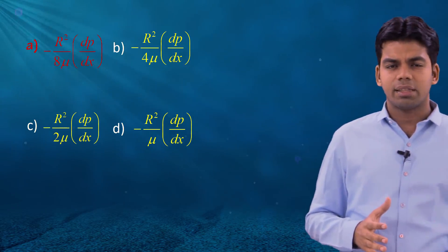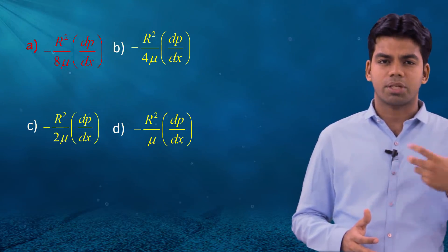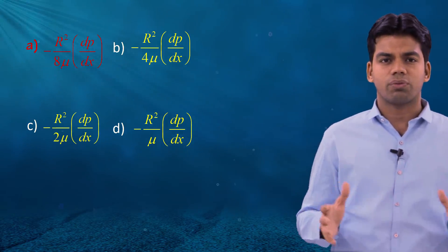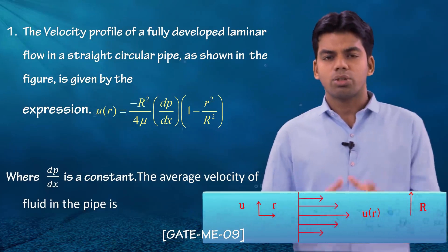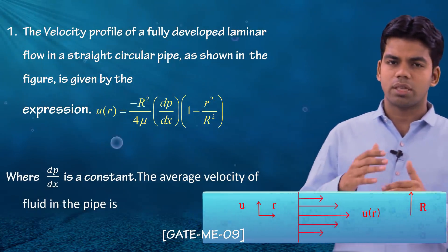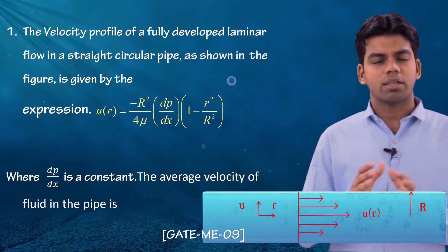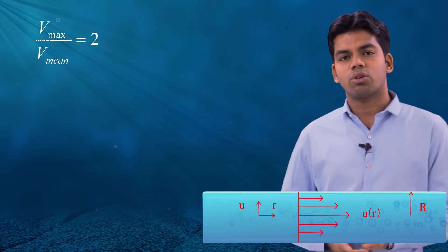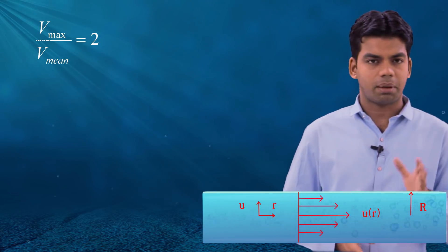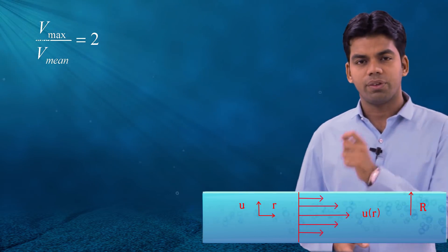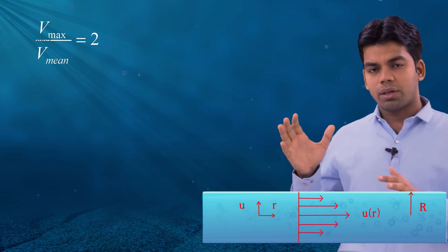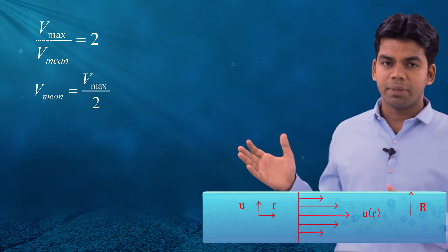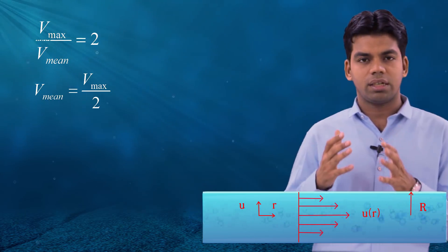There is an easy shortcut method to solve the same question within a few seconds. Just remember: when water flows through a pipe in laminar flow, the ratio of maximum velocity to mean velocity is equal to 2. That is, V_max / V_mean = 2, which means V_mean = V_max / 2.